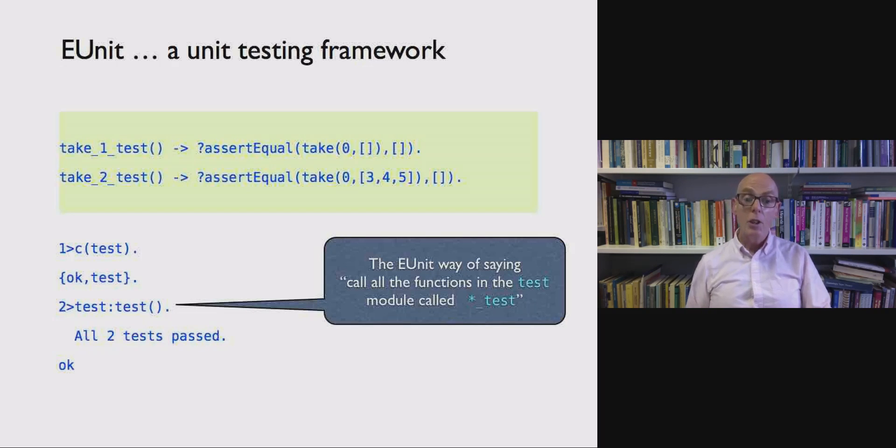Now here are two tests and if we call test colon test that will call every function in the module we're working with called something underscore test. So it will automatically call those functions and it will report that the two tests, all the two tests have passed.